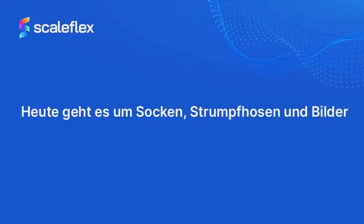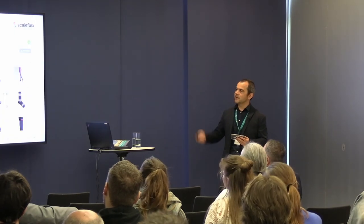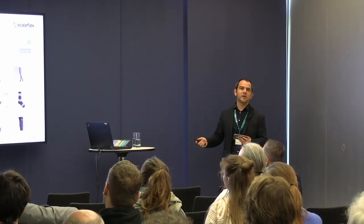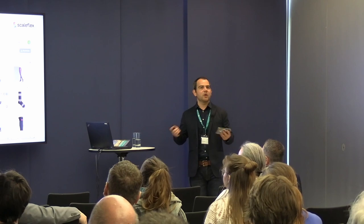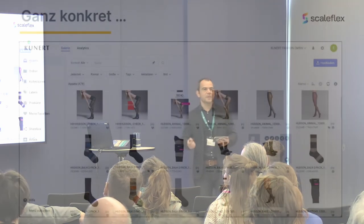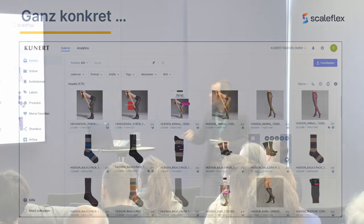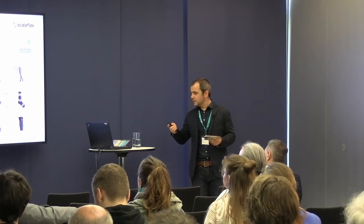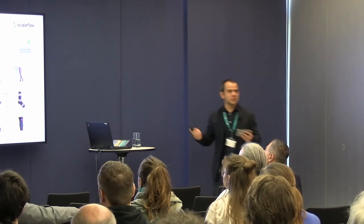And it's about socks, pantyhoses, and images. You will understand in a minute what this is all about. It is about how a company like Coonert and other companies can organize their media, prepare the media, and optimize the media to publish them in an omni-channel strategy.